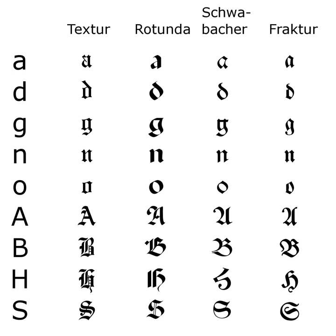German émigrés were urged to use only 'German script.' On January 3, 1941, the Nazi Party ended this controversy in favour of the modern scripts including Antiqua. Martin Bormann issued a circular to all public offices which declared Fraktur and its corollary, the Sütterlin-based handwriting, prohibited from further use. German historian Albert Kapr has speculated that the regime had realised that Fraktur would inhibit communication in the territories occupied during World War II.